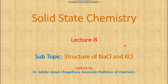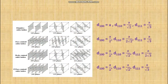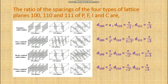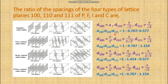Hello everyone. We are in lecture number eight of solid state chemistry. In this lecture we are going to discuss the crystal structure of sodium chloride and potassium chloride using the Bragg diffraction method. You may remember this slide previously discussed for the four lattice planes, where their interplanar distances were measured. If the interplanar distances for the 100, 110, and 111 planes are taken as a ratio, the ratio can be calculated. This ratio will be very helpful in determining the crystal structure of sodium chloride and potassium chloride.